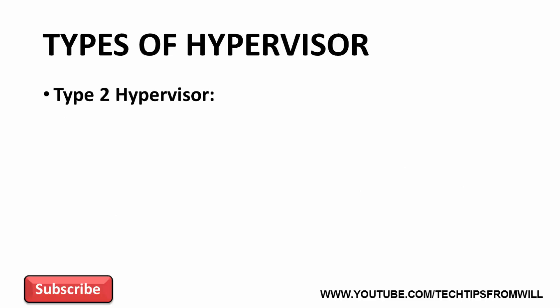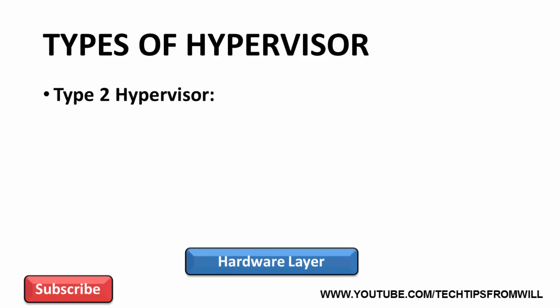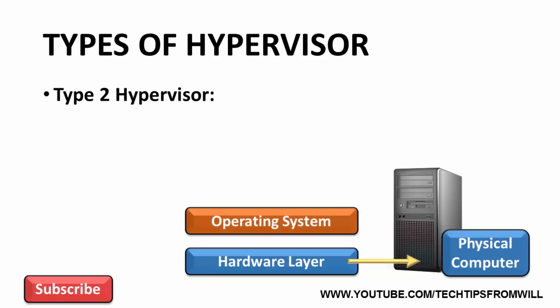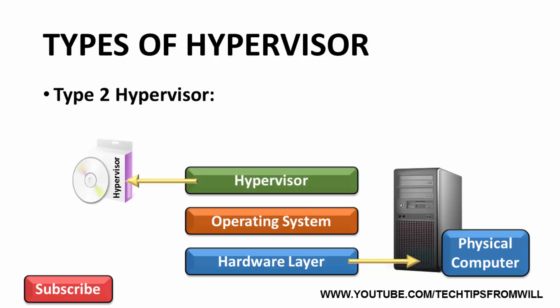Let's compare this to a type 2 hypervisor. With a type 2 hypervisor, once again you have the hardware layer — remember, the hardware layer is nothing more than a typical computer. However this time, rather than installing a hypervisor, the administrator instead installs a traditional operating system. With the operating system installed, the administrator would then install the hypervisor. With setups like this, the hypervisor is typically some kind of software application that is designed to act like a hypervisor.